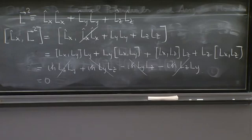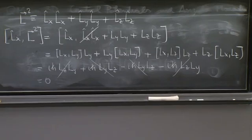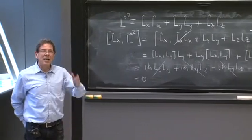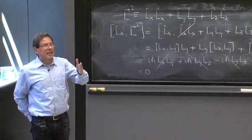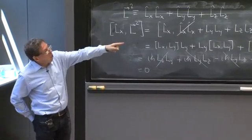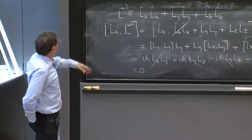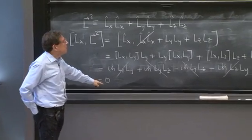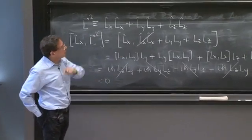That's an incredible relief. Because now you have a second operator that is measurable simultaneously. You can get eigenstates that are eigenstates of one of the Ls, for example, Lx and L squared, because they commute. And you won't have the problems you have there.